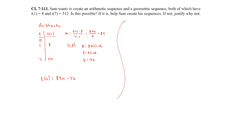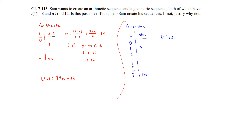Now let's look at the geometric sequence. We know position 1 is 8 and position 7 is 512. To get from position 1 to position 7, we multiply by b a total of 6 times, so 8 times b to the 6th equals 512.